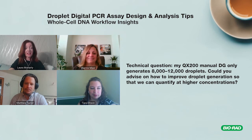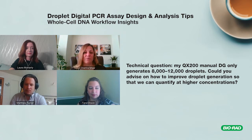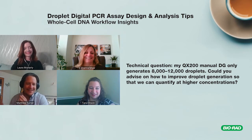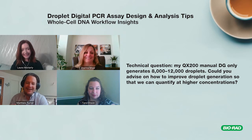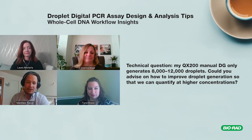Diana added: proper vortexing of all reagents prior to making your supermix, as well as after adding all components including the sample, is really critical for making good properly sized droplets. Unlike qPCR where heating and cooling mixes the sample, with droplet digital PCR you're creating droplets first — so if you didn't mix thoroughly, some droplets will have a lot more components than others. Everything needs to be evenly dispersed across the sample.